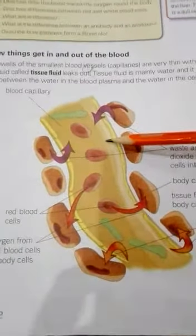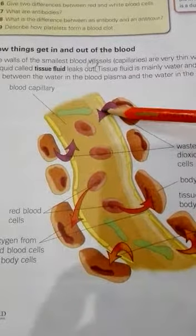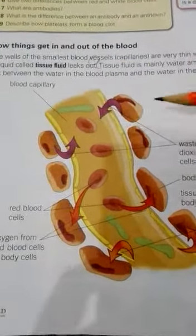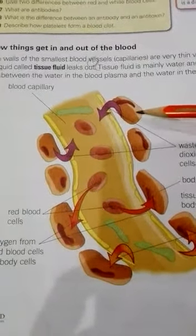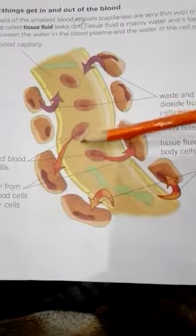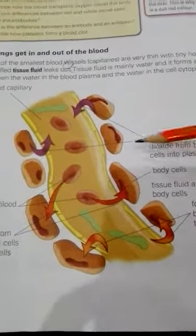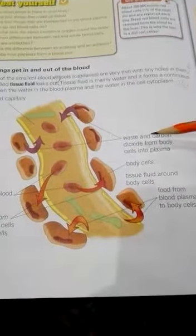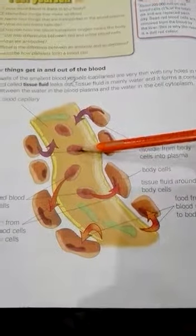Here you can see the diagram of the blood capillaries. You can see how exchange takes place through these capillaries. These are the body cells and this is the blood capillary. Here you can see the red blood cells. Oxygen will be transported from these red blood cells to the other body cells, and waste material such as carbon dioxide from the body cells will move into the blood plasma.